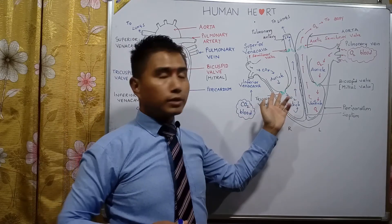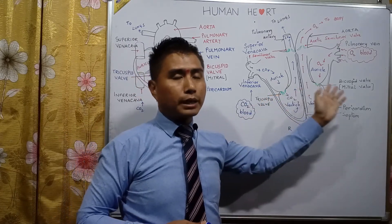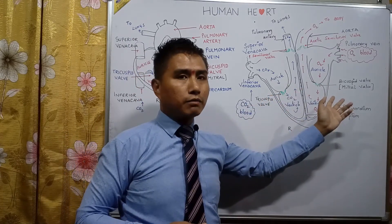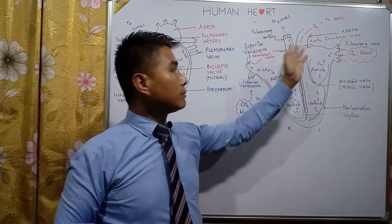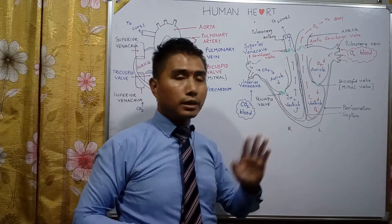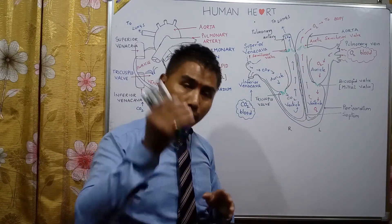So in total, there are four valves: the tricuspid valve, the bicuspid valve (also known as the mitral valve), the pulmonary semi-lunar valve, and the aortic semi-lunar valve.